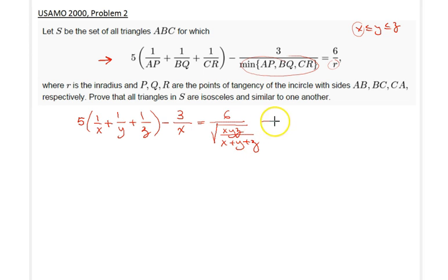Therefore this can equivalently be written as five over x minus three over x is two over x, plus five over y plus five over z, which is equal to six times the square root of x plus y plus z all divided by xyz.